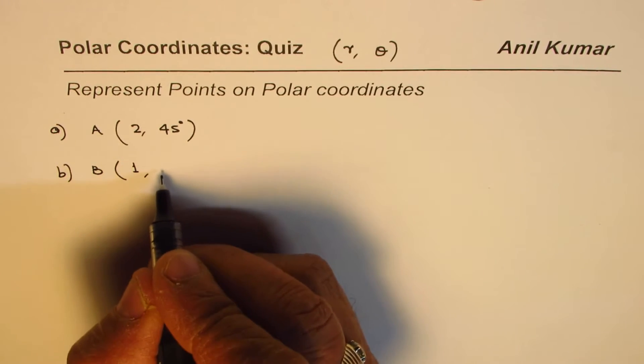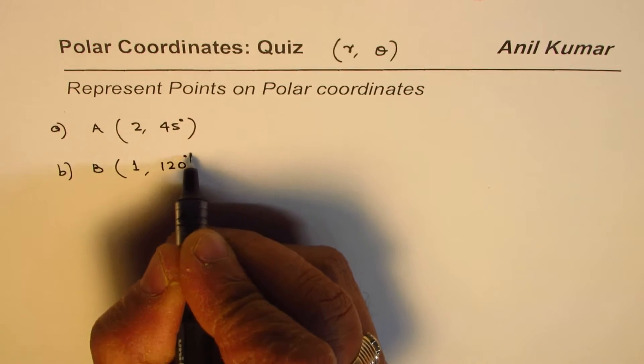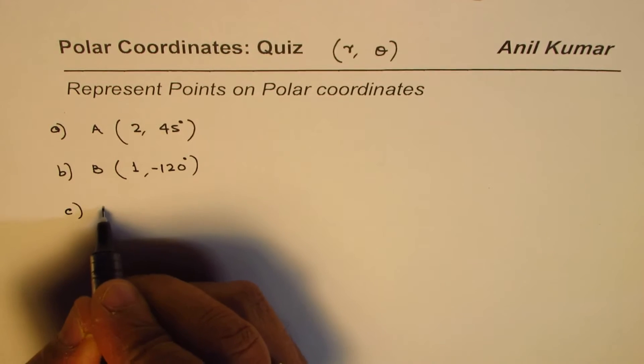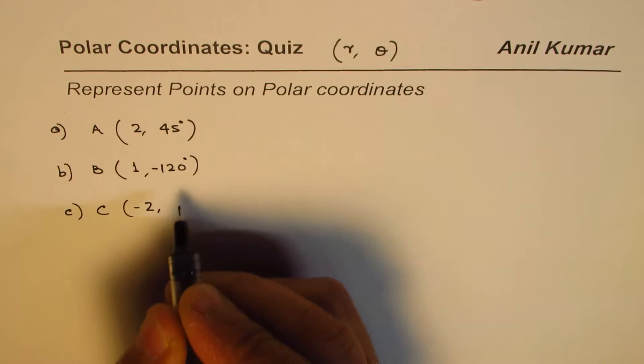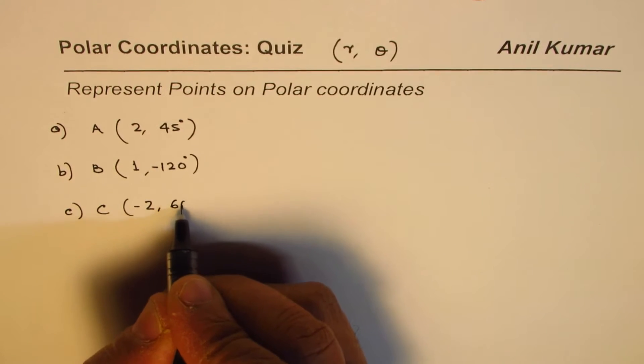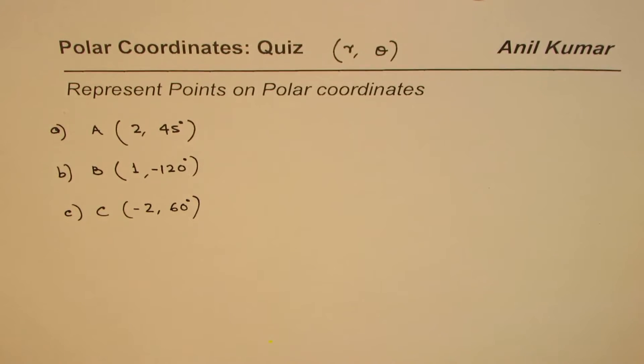Let's say we have another point which is 120 degrees, but minus 120 degrees. Point C for us will be negative, that's a negative 2, and the angle will be 60 degrees. So these are the angles given in degrees.